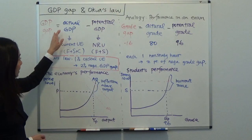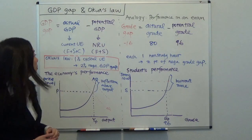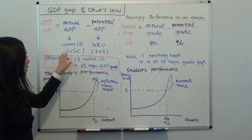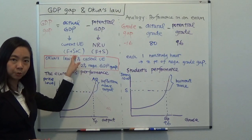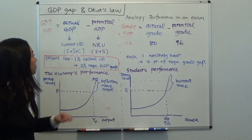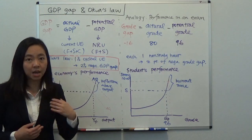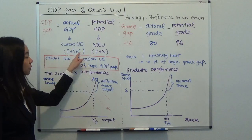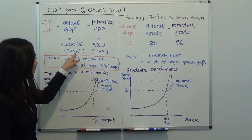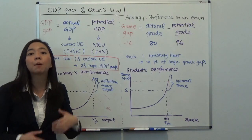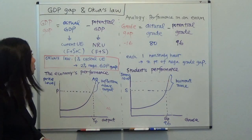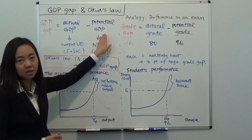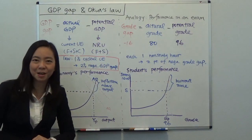Actual GDP is the GDP corresponding to your current unemployment rate, which includes frictional unemployment, structural unemployment, and cyclical unemployment. So if the economy is in a recession, that means you also have workers who are cyclically unemployed. In that case, your economy is not operating at its potential, so actual GDP is going to be lower than potential GDP, creating a negative GDP gap.